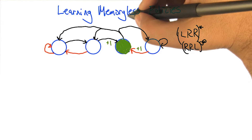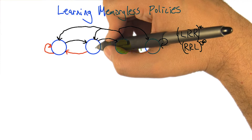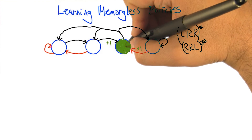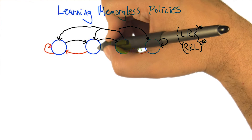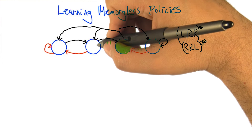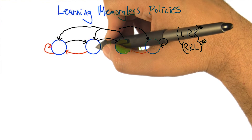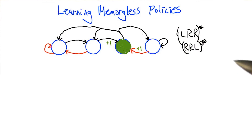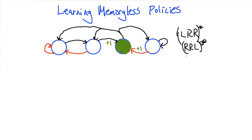But now what we're talking about are memoryless policies. A memoryless policy has the form: when you're in the green state, there's only one action choice, so you take it. When you're in the clear blue state, you have to go either left or right, or maybe you can choose probabilistically among left and right. But you can't do these sequences because it's memoryless — you need memory to do a sequence.